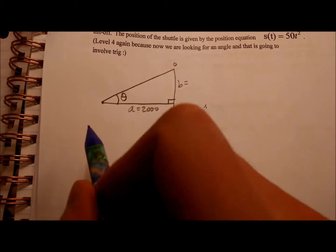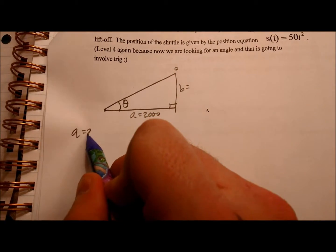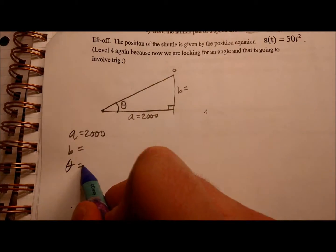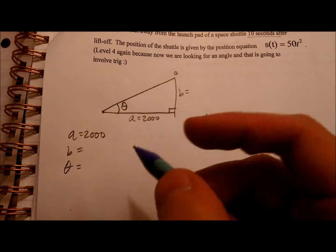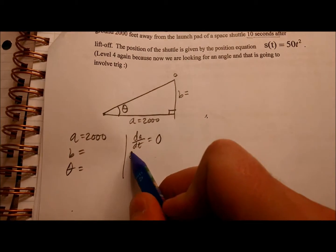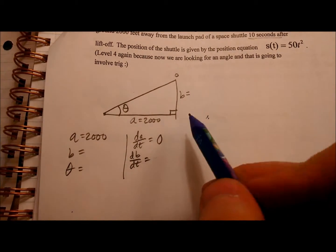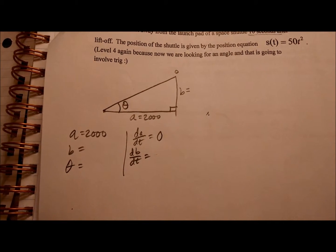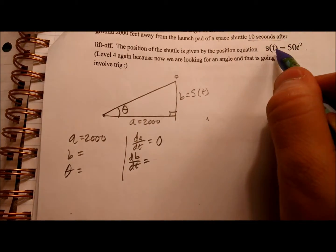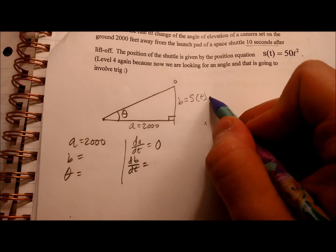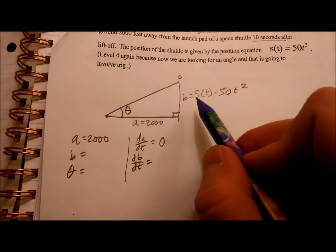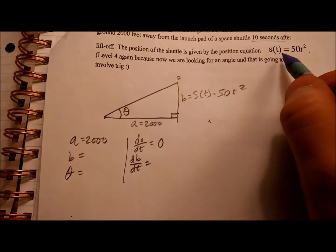First thing I know is that A is 2,000, and that is always going to be the case. B is, we'll figure that out in a minute, and theta. DADT is, no, you're not changing. DBDT, well if that's the height, I could say B, you're equal to S of T. You're equal to this thing over here. So if I wanted to find DBDT, I really want to differentiate this. I want to take the derivative. So let's think about that. What would S prime of T be?